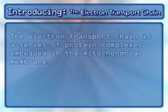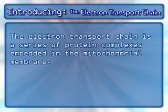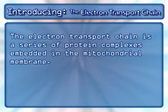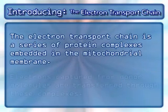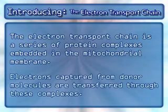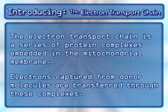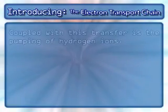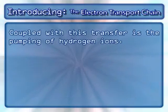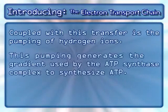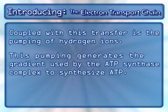The electron transport chain is a series of protein complexes embedded in the mitochondrial membrane. Electrons captured from donor molecules are transferred through these complexes. Coupled with this transfer is the pumping of hydrogen ions, which generates the gradient used by the ATP synthase complex to synthesize ATP.